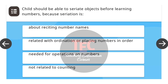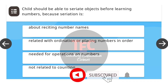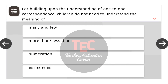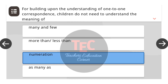Next question: A child should be able to seriate objects before learning numbers because seriation is related with ordination or placing numbers in order. Next question: For building upon the understanding of one-to-one correspondence, children do not need to understand the meaning of — the correct answer is numeration.